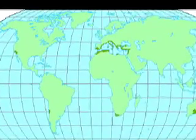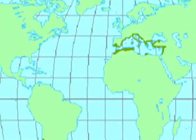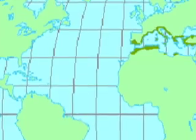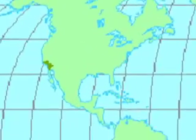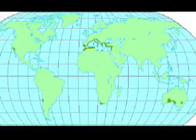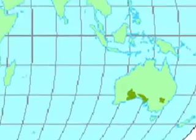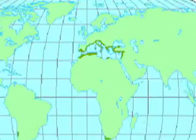The Chaparral biome is the smallest of them all. The Chaparral biome is found in a little bit of most of the continents: the west coast of the United States, the west coast of South America, the Cape Town area of South Africa, the western tip of Australia, and the coastal area of the Mediterranean.